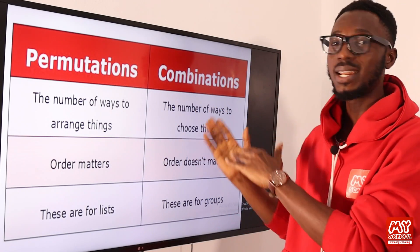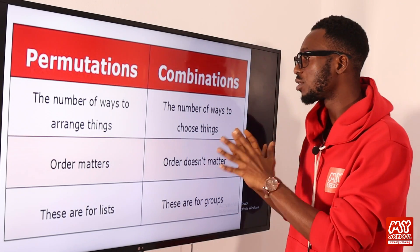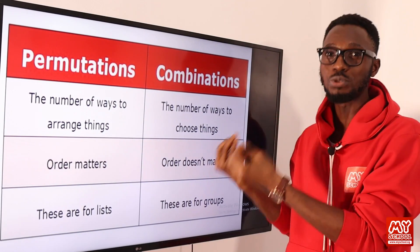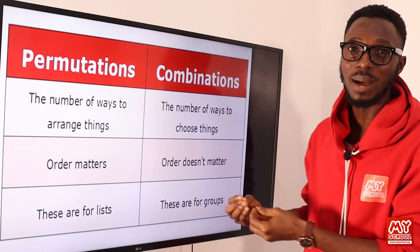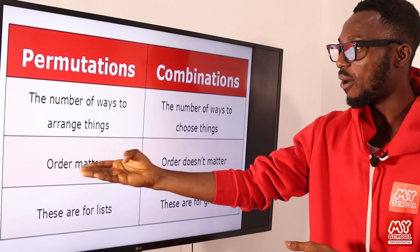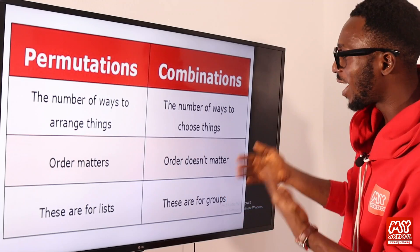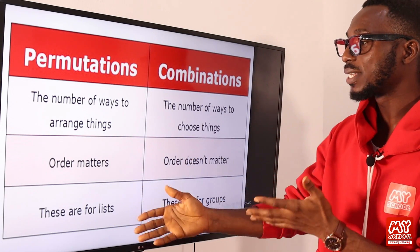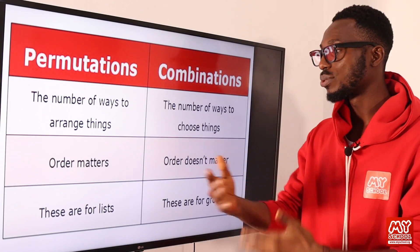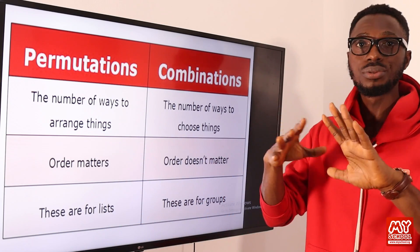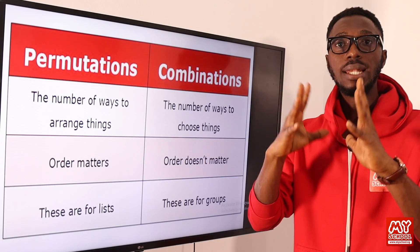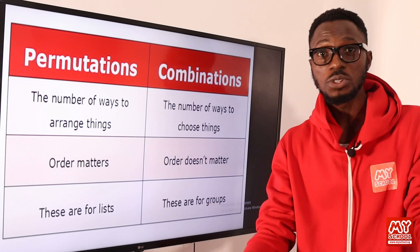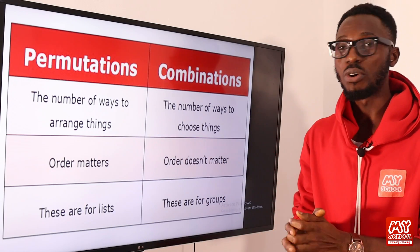On the flip side, we have combination — the number of ways to choose things. This is about selection; you want to choose and you do not care so much about order. So we see that order matters for permutation, while order doesn't matter for combination. Permutation is also for lists — if you want to list things out, like a list of books or stationery for resumption, that's where permutation comes in.